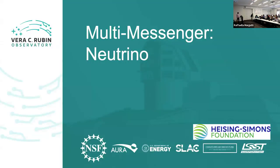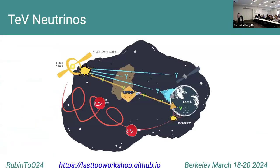It is my absolute pleasure to be here representing Team Neutrino. We are a little outnumbered, so let me start by reminding you why neutrinos are really exciting. We have known for over 100 years that the Earth is continuously bombarded by charged particles known as cosmic rays. These particles can have extremely high energies — a billion times higher than we can achieve on Earth with the Large Hadron Collider — meaning there are natural cosmic particle accelerators in the universe far more impressive than anything we can build.